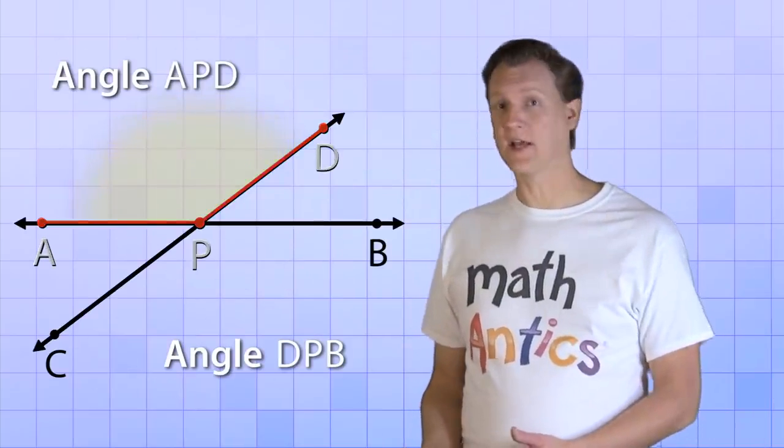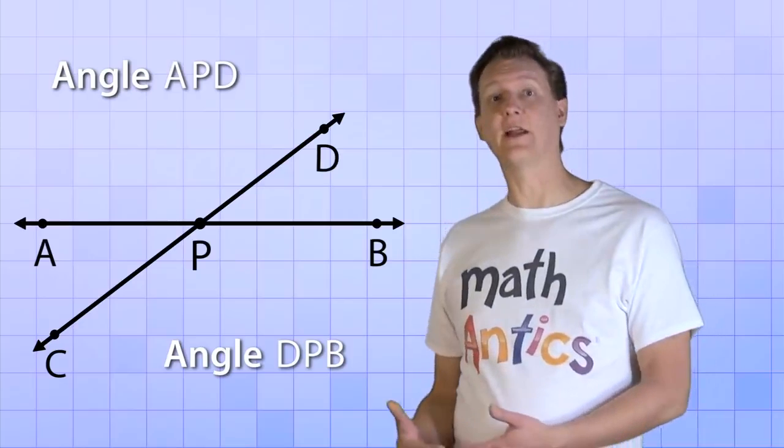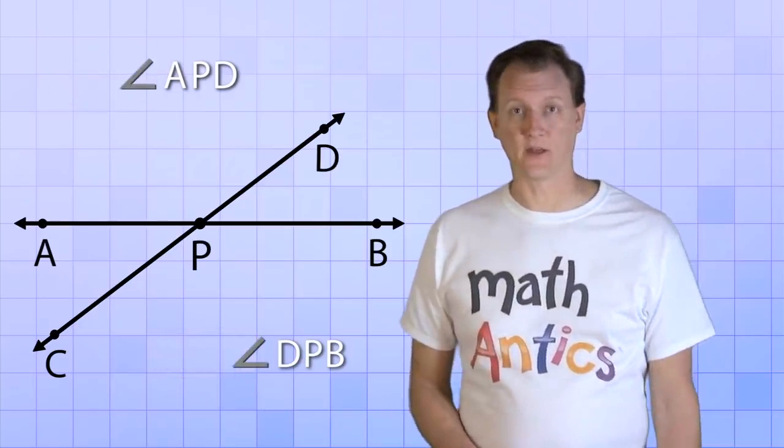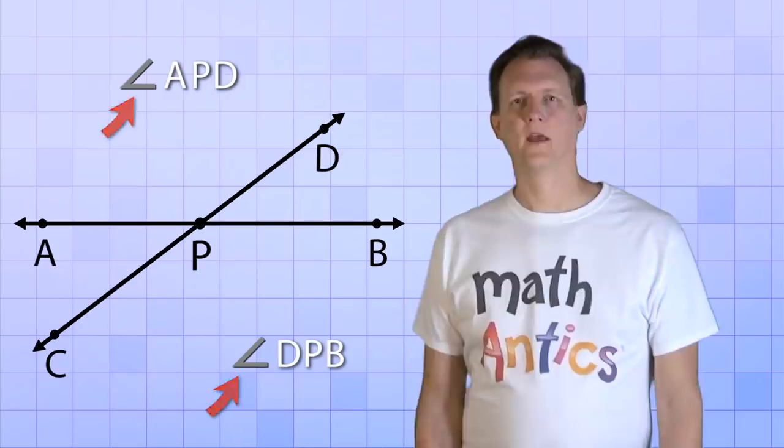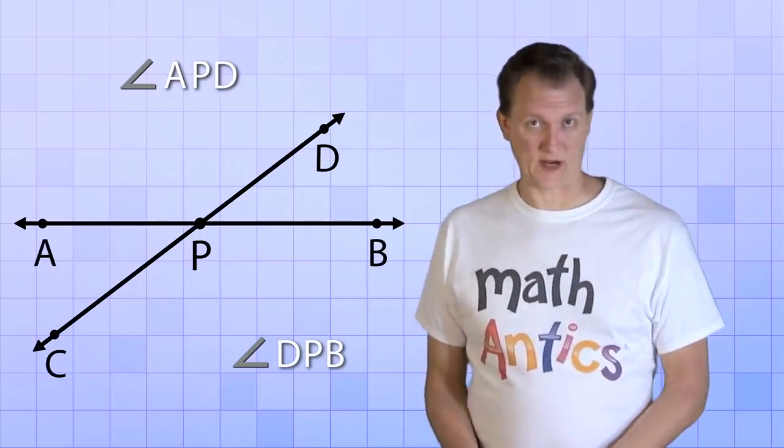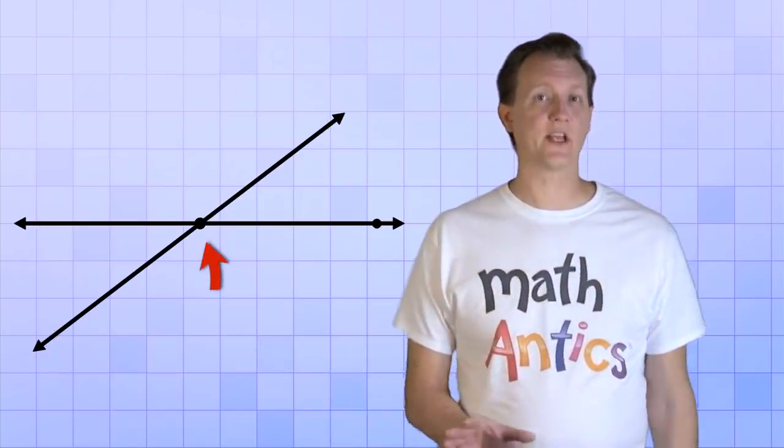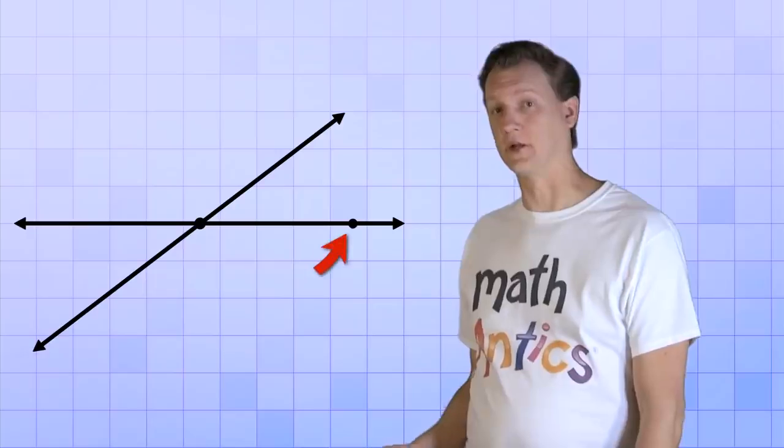Now when naming angles, there's a nice shorthand that we can use. Instead of writing the word angle over and over again, we can just use the angle symbol instead, which looks like this. But there's an even simpler way to name angles. To learn that way, let's erase all the points and letters on our lines, except for the intersection point and this one point here.